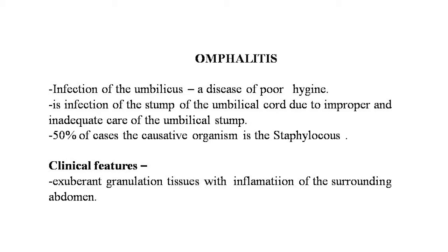Omphalitis — infection of the umbilicus — may occur in babies and adults and generally results from poor hygiene. True omphalitis is infection of the stump of the umbilical cord, resulting from improper and inadequate care of the umbilical stump. Bacterial infection occurs in the stump in more than 50 percent of cases. The causative organism is most commonly Staphylococcus; less commonly Streptococci, Escherichia coli, and Clostridium tetani have been isolated.